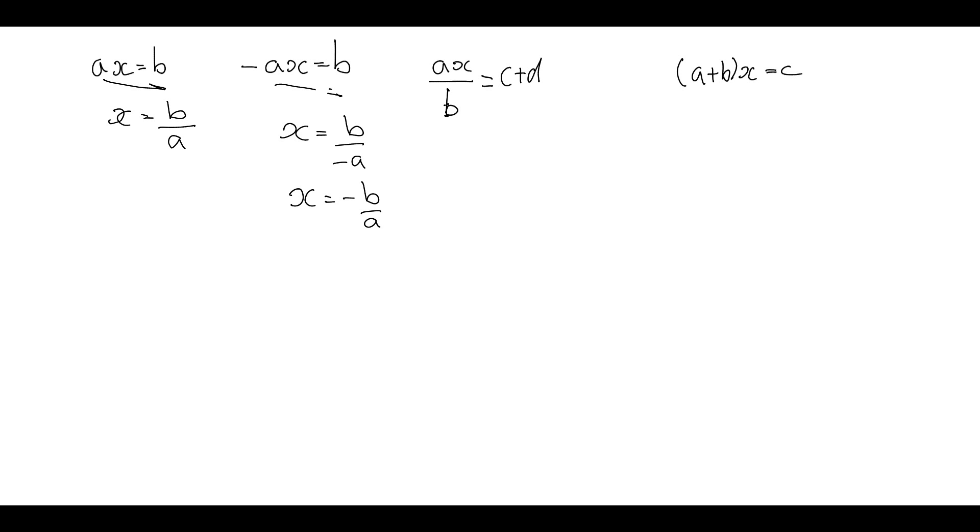On the next term, we've got two things happening. The x is being multiplied by a and divided by b. And we can deal with those at the same time by bringing the a down and taking the b up. And so we get x equals b.